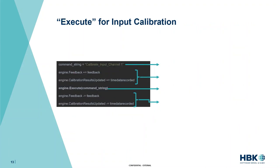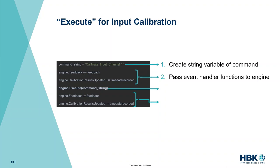Now that we've done the get and set, it's time to run the test in the execute phase. We create a string variable containing the command we want to run — in the script the channel number is pulled from the front panel dynamically, but here it's hard-coded to channel one for simplicity. Then we attach two event handler functions to the engine object: one for text feedback and one for handling the graphing of time data. Then it's as simple as executing the command, and afterwards we disconnect the event handlers for general housekeeping.